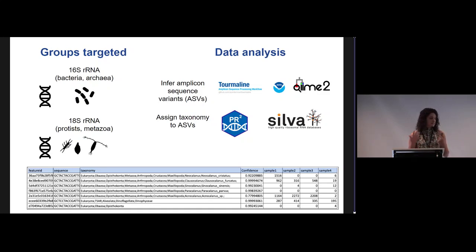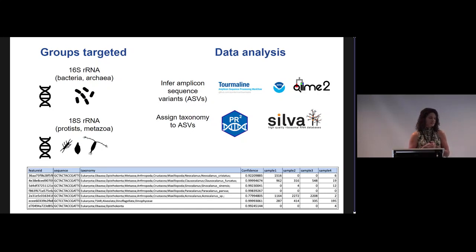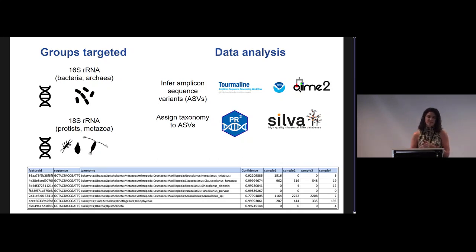What we use a lot is the 16S rRNA gene, which will get you some bacteria and archaea, and the 18S gene, which can tell you a little bit about the protists and metazoa in a sample. We use large sequencing data to arrive at amplicon sequence variants, or ASVs. These are all of the unique sequences seen within a sample. Then we use public databases to assign taxonomy to these ASVs.